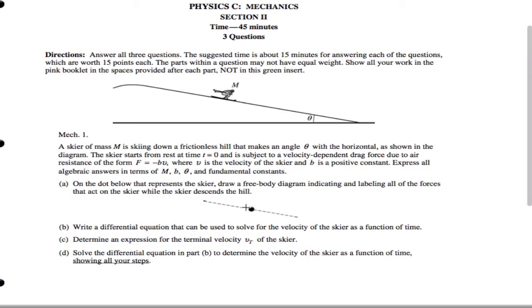So it says here, label all the forces. So we're going to have a normal on the skier. We're going to have the weight of the skier and we're going to have this air resistance force F that I'll call negative BV. And that's basically how this is going to work. So that's how we label all the forces.